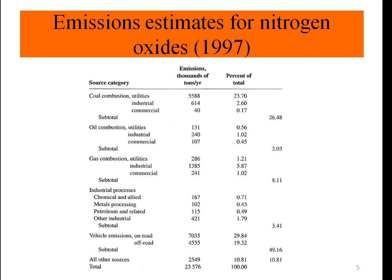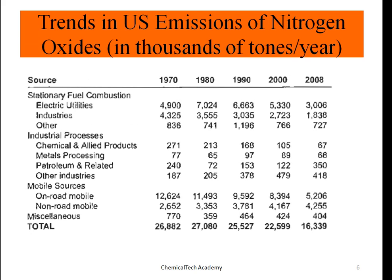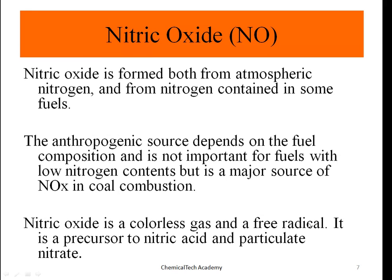About half of all nitrogen oxide emissions come from vehicle emissions. Looking at trends in US NOx emissions in thousands of tons per year, stationary fuel combustion has been reduced, industrial processes reduced from 271 to 67, and mobile sources from about 12,000 to 5,000, bringing the total from almost 27,000 down to 16,000.